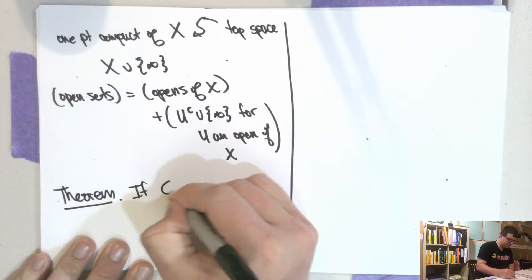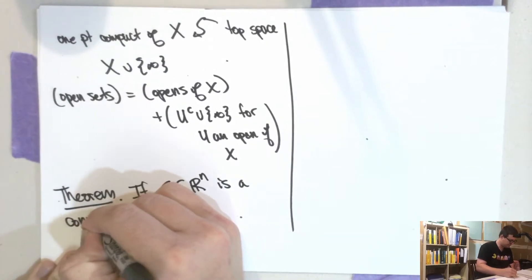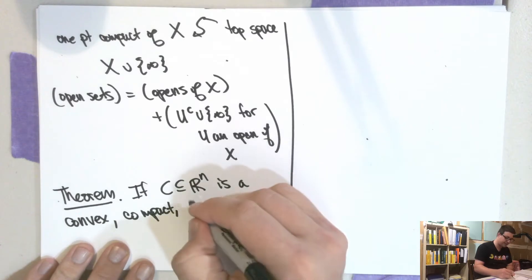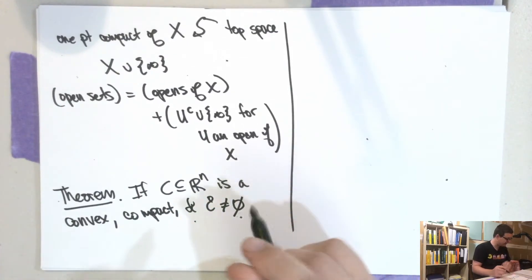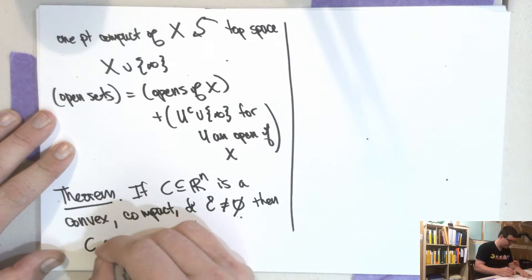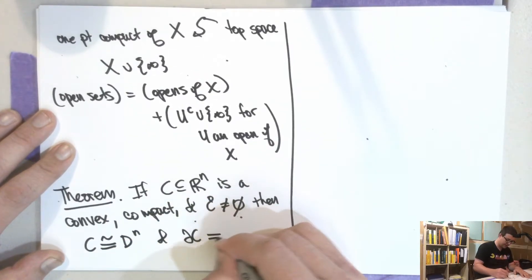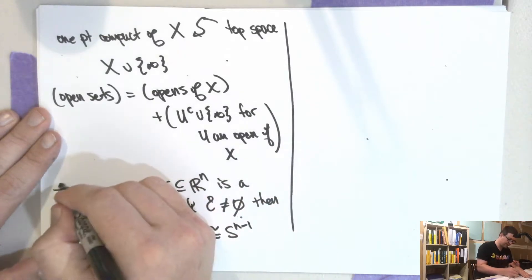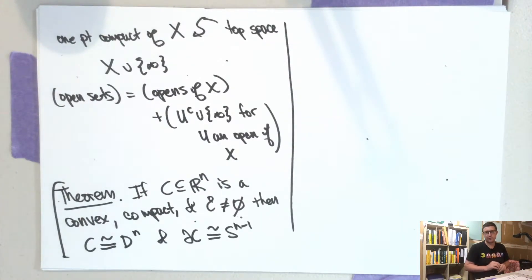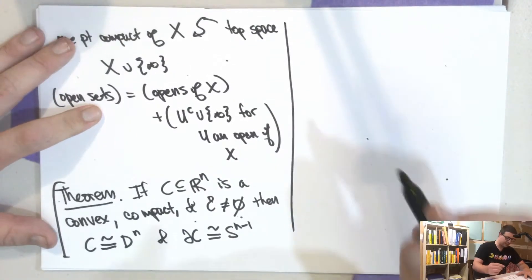So the theorem says the following. So if C is contained in ℝⁿ, is a convex, compact set, and it has non-empty interior. So this means that there's an open set in the middle. Then two things happen. C is homeomorphic to Dⁿ. And the boundary of C is homeomorphic to Sⁿ⁻¹. So anytime you have a convex, compact set with non-empty interior, it is homeomorphic to this ball. And the boundary is homeomorphic to the sphere.